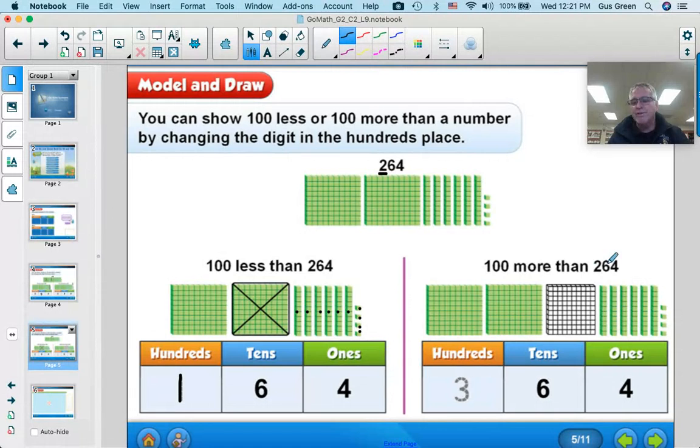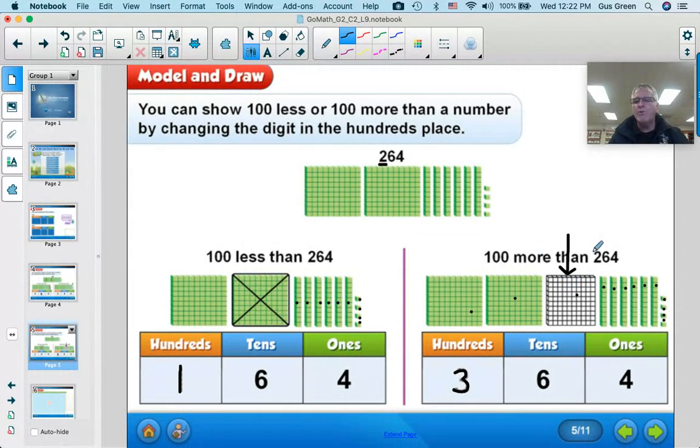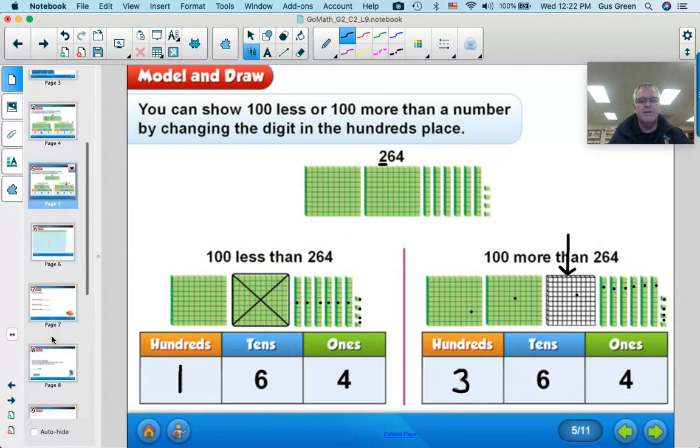100 more than 264, we take the exact same drawing, but we add a hundred. So now in the hundreds digit, there's a 3 instead of a 2. It's one more, one more hundred. So we have 1, 2, 3 hundreds, 1, 2, 3, 4, 5, 6 tens, and 1, 2, 3, 4 ones. So 100 more than 264 is 364.